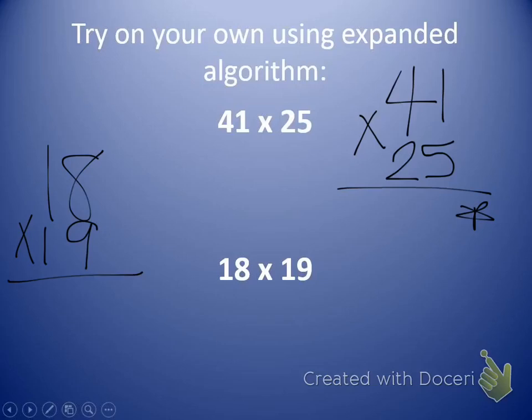Same thing with 18 times 19. Multiplying and making sure you're writing each of the products down below. They will be partial products down there, so you must remember to add to get your final product. Complete those in your math journal and you are done.